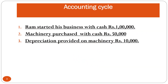We have three transactions here. First, Ram started his business with cash of rupees 1 lakh. Then he purchased machinery with cash of rupees 50,000. On that machinery he charged depreciation worth rupees 10,000. We will understand the accounting treatment of depreciation through these entries.